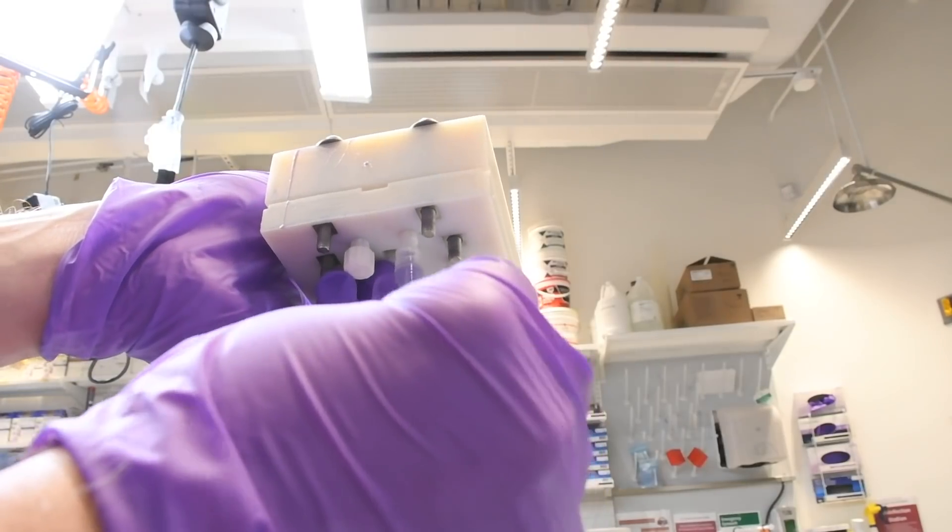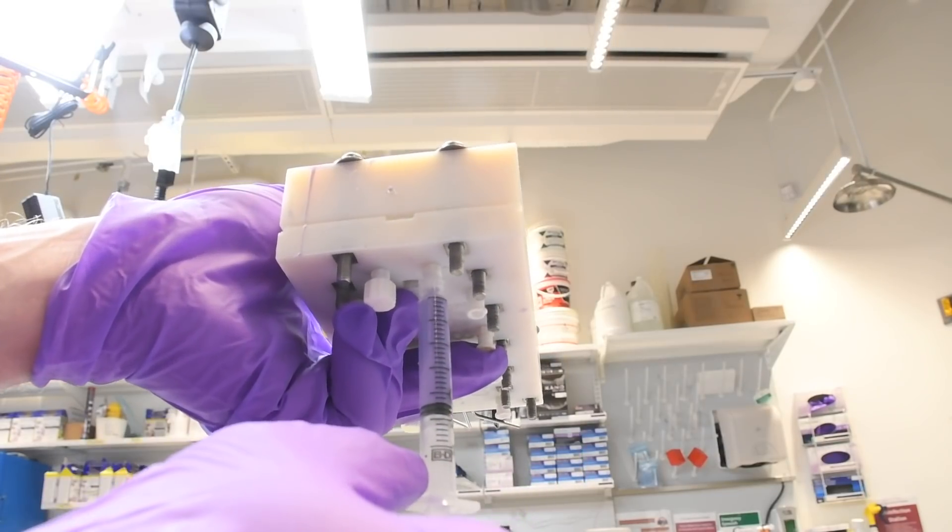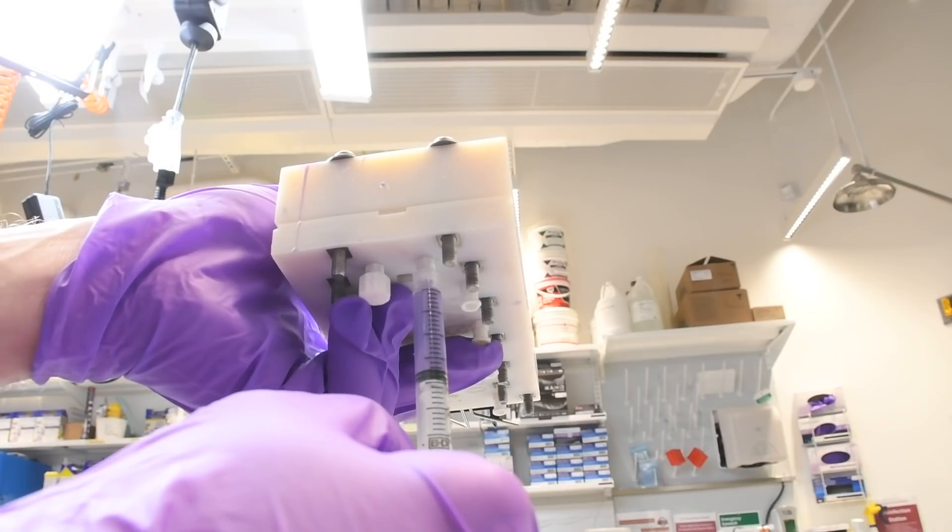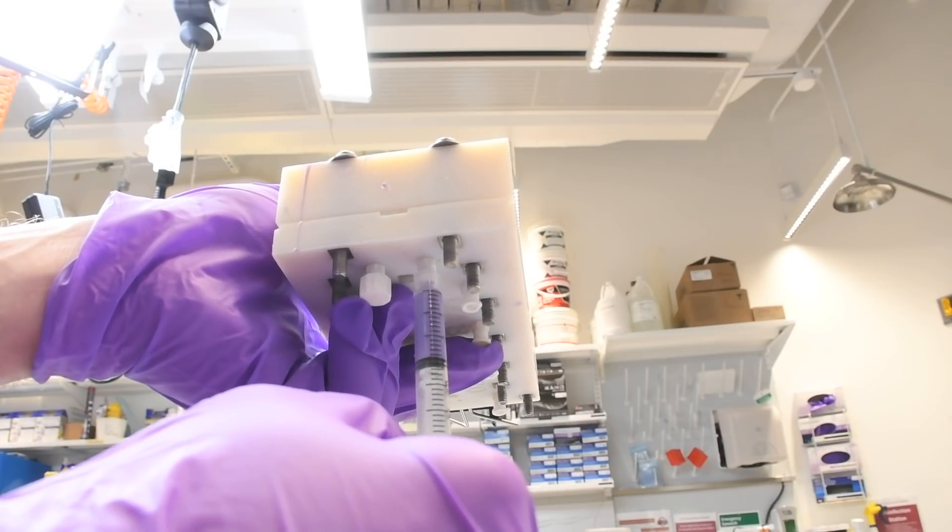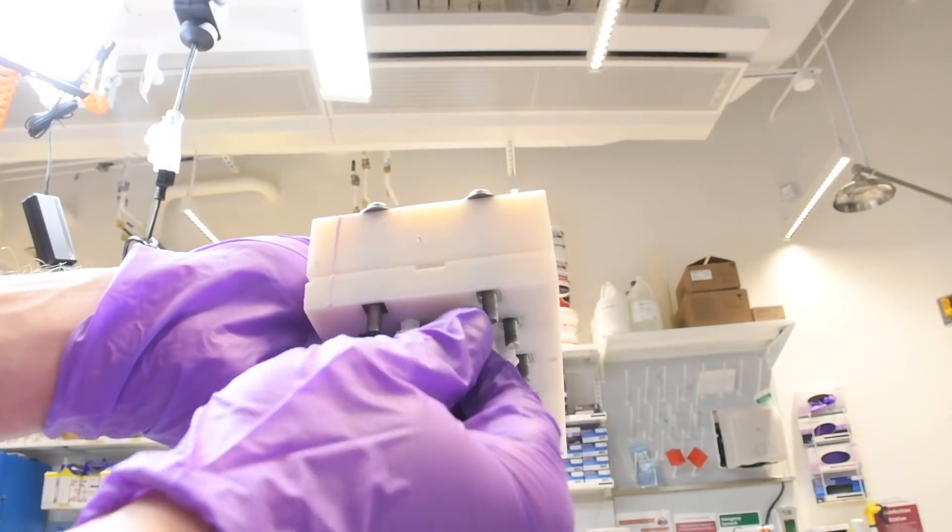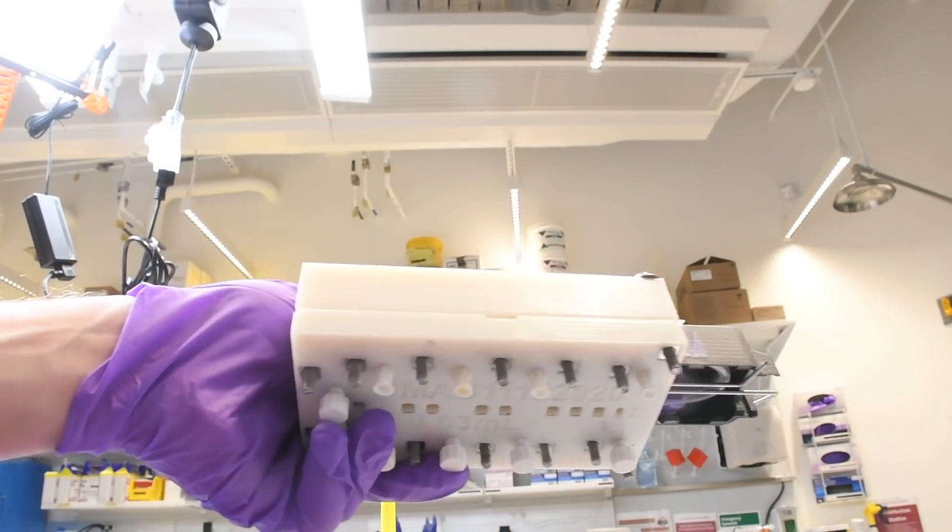Each one of the dome actuators requires its own injection port, requiring 0.7 milliliters of silicone. We use a syringe to precisely meter this, and once done, we remove the syringe and cap it individually. We do this for each of the 10 magnetic dome actuators.